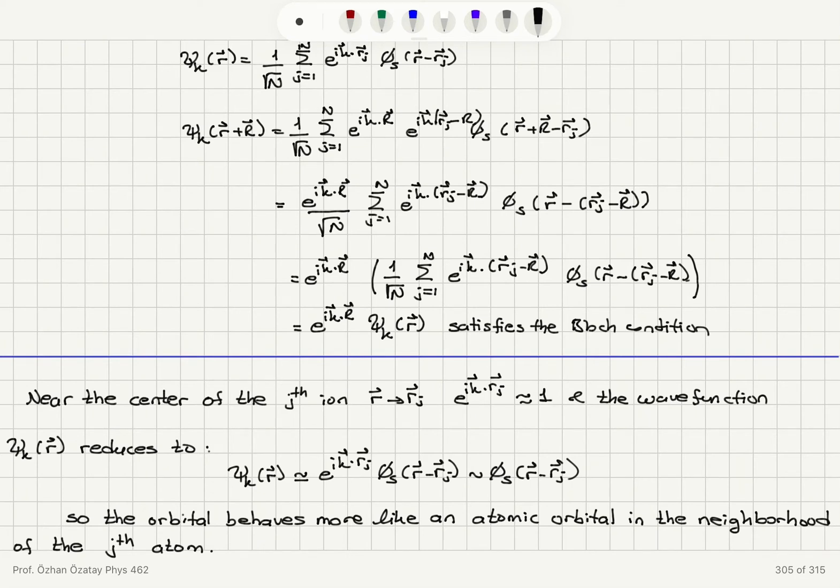So remember that this is the form of the wave function in the Bloch condition so that absolute square of psi is periodic so the phase factor just absolute value gives me one